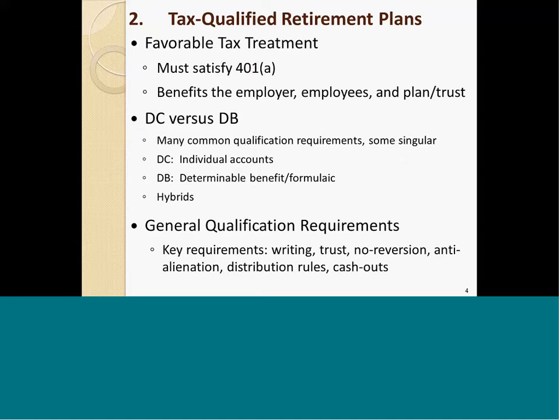One of the things that makes tax-qualified plans so popular is they have certain very favorable tax features. If a plan is qualified under Section 401A of the code, the employees are going to get some benefits, the employer is going to get some benefits, and the trust that holds the plan assets is going to get some benefits too. Employees with a vested benefit don't have to count the benefits in their gross income or recognize them until they actually receive them, and that's pretty powerful. An employer sponsoring a plan is going to have a corresponding tax advantage of deductibility, and the trust itself is generally exempt from federal income taxation, which allows for a tax-free accumulation of income earned inside the plan.